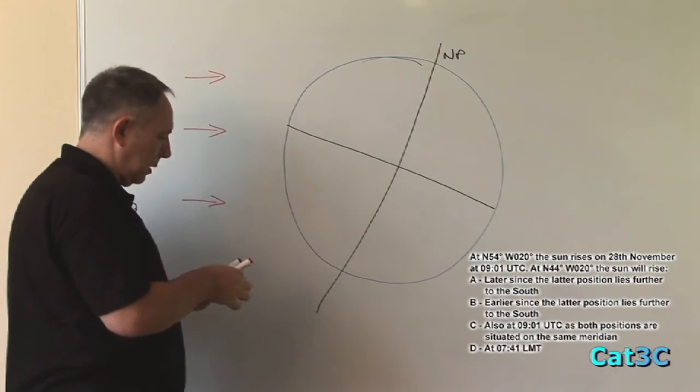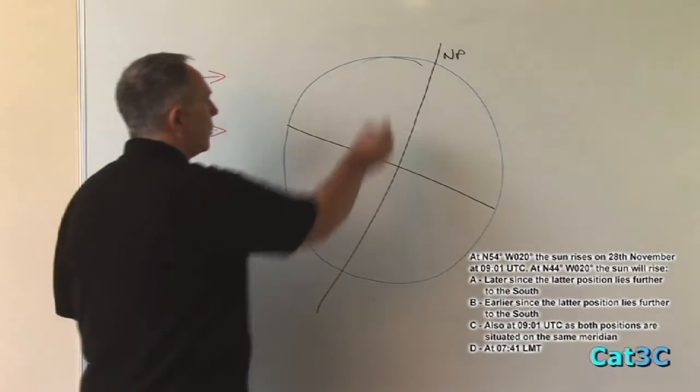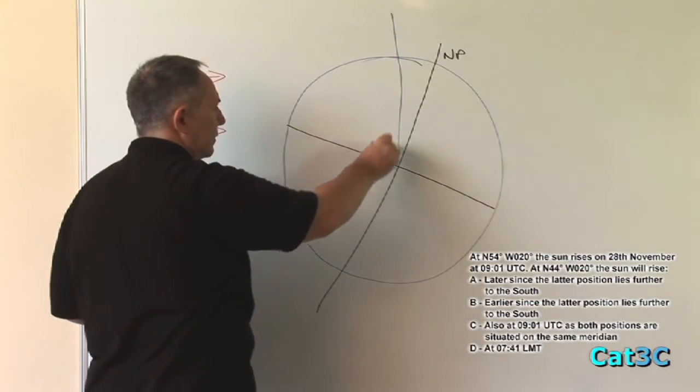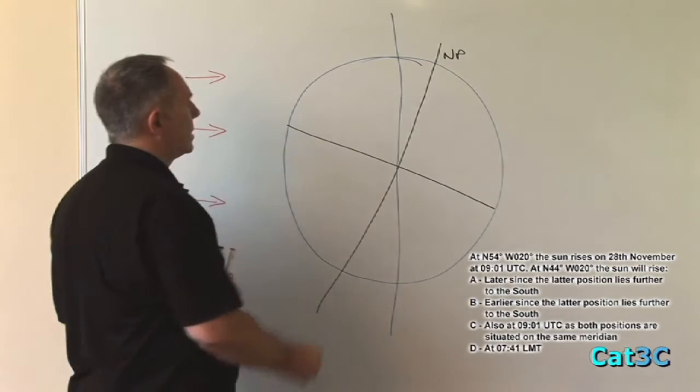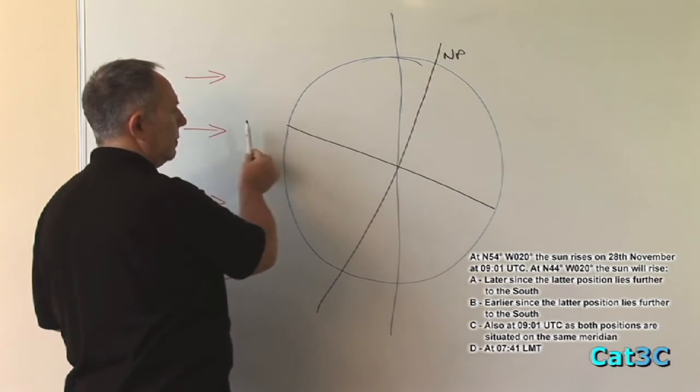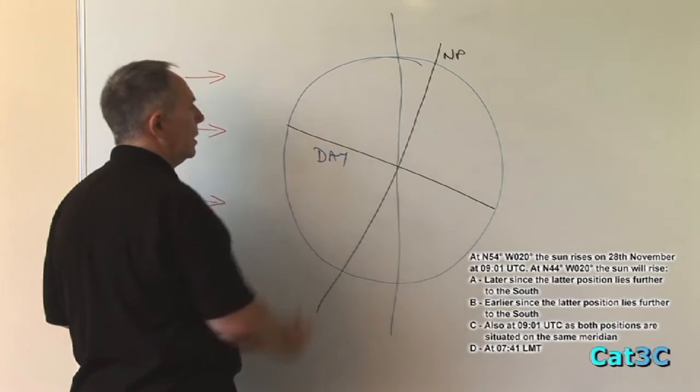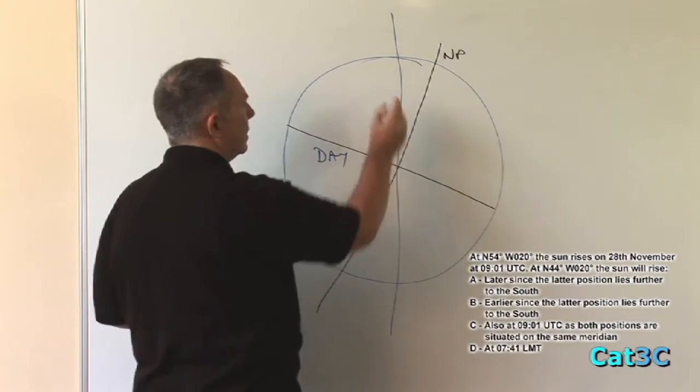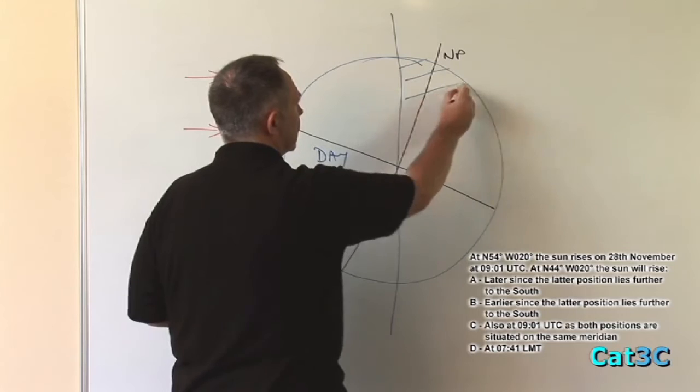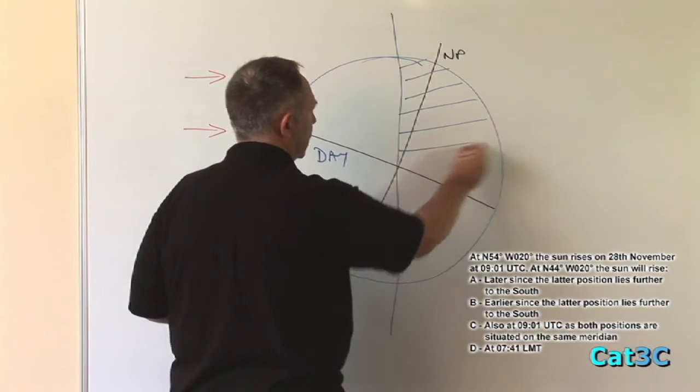Now, if I take a line and draw it perpendicular down to the centre of the earth, we can see that this side of the earth is receiving the sun's rays and therefore is in daytime, whereas this side of the earth is not receiving the sun's rays and as such is in nighttime.